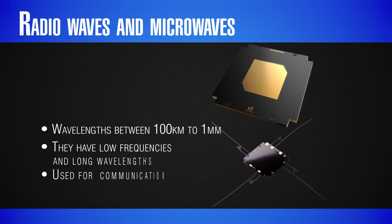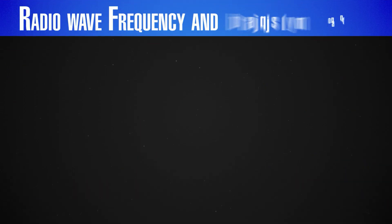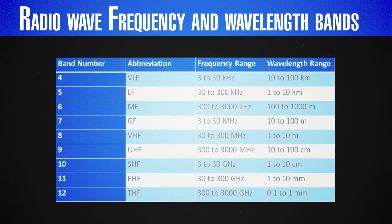Let's look at microwaves and radio waves — that is the range we are interested in regarding SATCOMs and data transfer. It includes waves in the range between 100 km to 1 mm. They have low frequencies and long wavelengths, and we use them for communication, TV, radar and GNSS. This class is divided into 9 more subclasses, starting from VLF, which stands for very low frequency, to THF, which stands for tremendously high frequency. I will get into detail later in this talk.